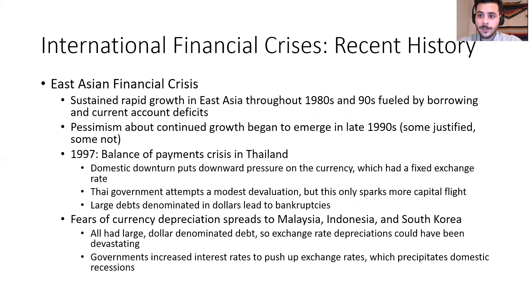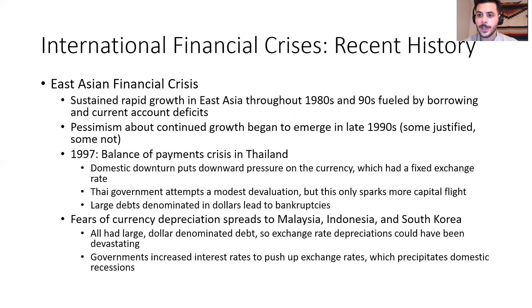The one group in developing countries that actually escaped unscathed from the 1980s crisis was East Asia — countries like Hong Kong, Taiwan, South Korea, Thailand, and Malaysia. Throughout the 1980s and 90s they really had a sustained boom with very rapid growth that wasn't affected by the 80s debt crisis. They were growing very rapidly, fueled by borrowing and current account deficits — a lot of investment going on, much of it funded by foreign lending.